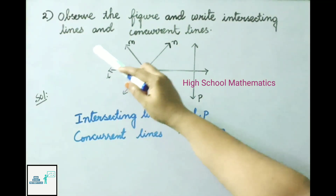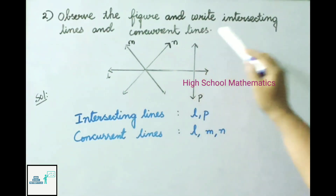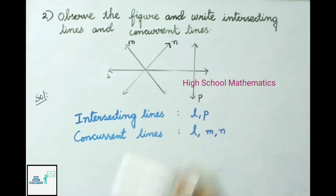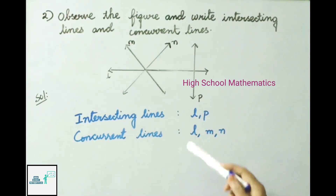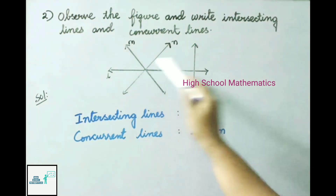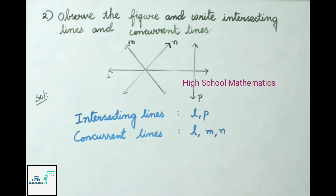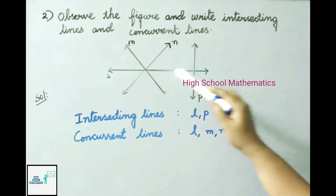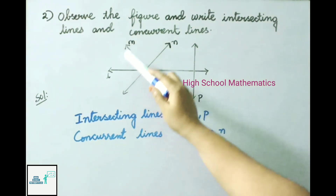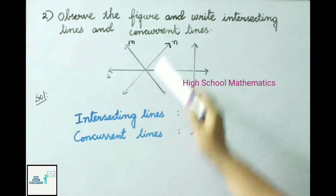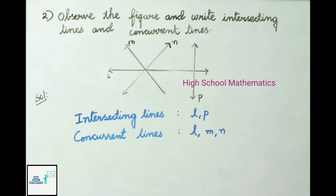Question 2: Observe the figure and write the intersecting lines and concurrent lines. Intersecting lines are L and P. Concurrent lines are L, M, and N — these three are concurrent lines.